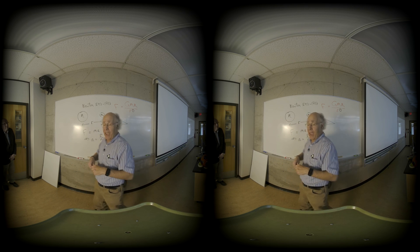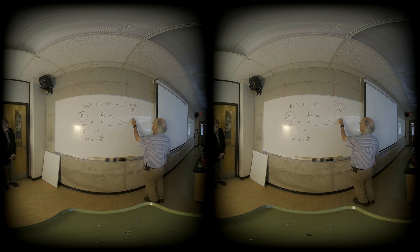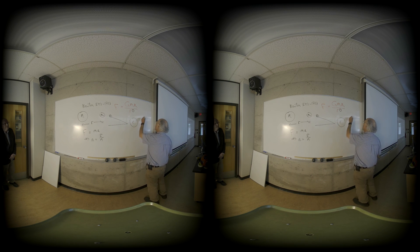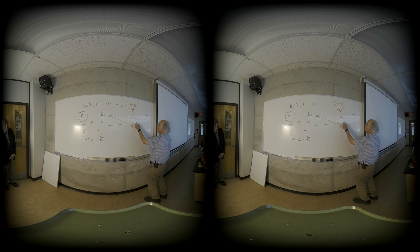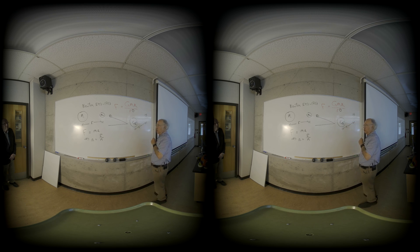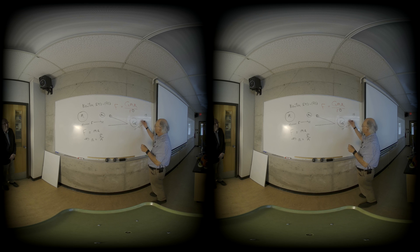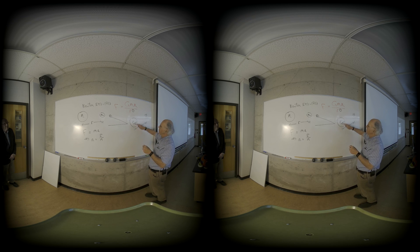If we have the earth here and the moon there, we know the moon goes around the earth every month, once a month. It takes a month for the moon to go around the earth. Knowing the radius of the earth, which was known pretty well then, and the distance of the moon, which astronomers had told Newton, it turns out the ratio is about a 60th. So the distance to the moon is about 60 times the radius of the earth.